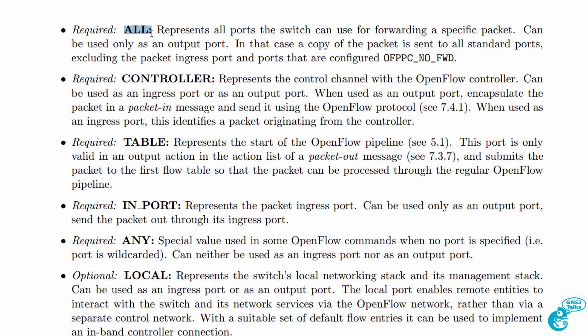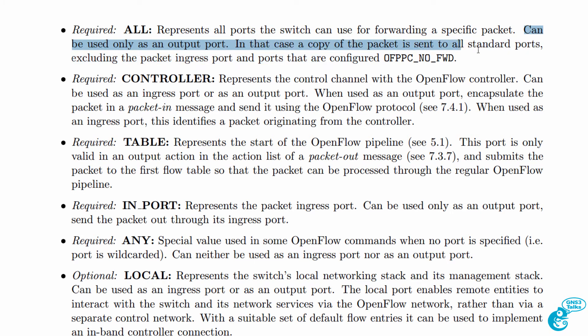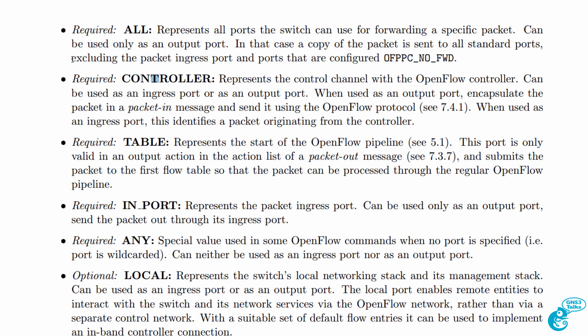What is ALL? ALL represents all the ports on a switch and can be used only as an output port. In that case, a copy of the packet is sent to all standard ports — excluding the ingress port and ports marked as OpenFlow no-forwarding. Through an application you can mark certain ports as no-forwarding, which means packets sent to the ALL port will not be sent out of those ports.